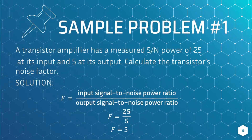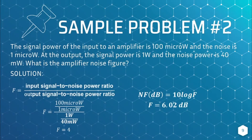Sample problem 1: A transistor amplifier has a measured signal-to-noise power of 25 at its input and 5 at its output. Calculate the transistor's noise factor. The noise factor F is unitless. Using the formula: F = (S/N)_input / (S/N)_output = 25 / 5. Therefore, the noise factor F = 5.